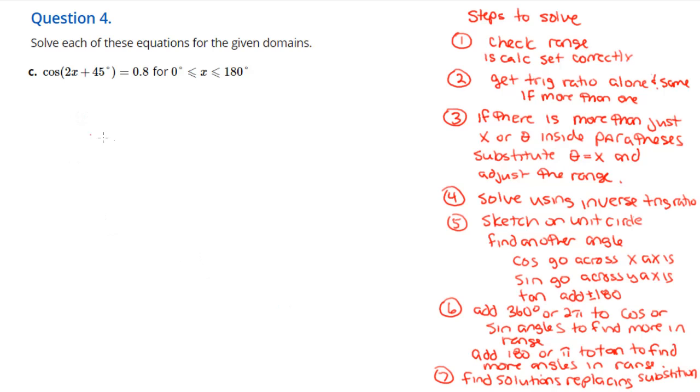So let's try it. First, the trig ratio is by itself. We notice that we're in degrees, make sure the calculator is set correctly. Now we're gonna take this 2x plus 45 out, replace it with theta. That's all we've done, just substituted it. We'll come back to that later. So now we're going to step 3.